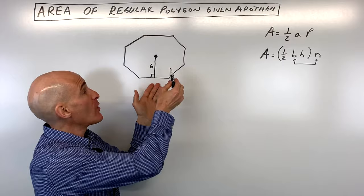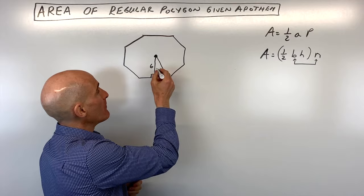Okay, you can see we're given this octagon right here with an apothem of six units, and we want to find the area. So how do we do that?